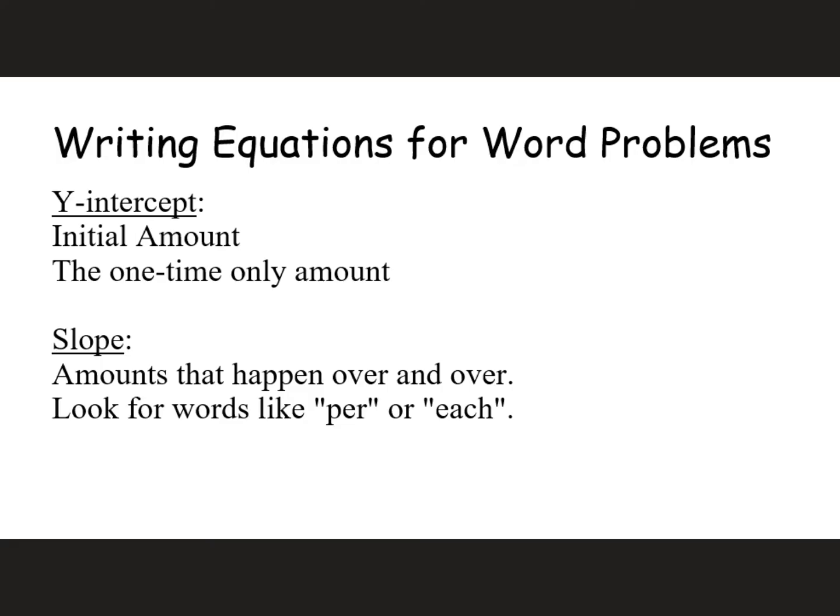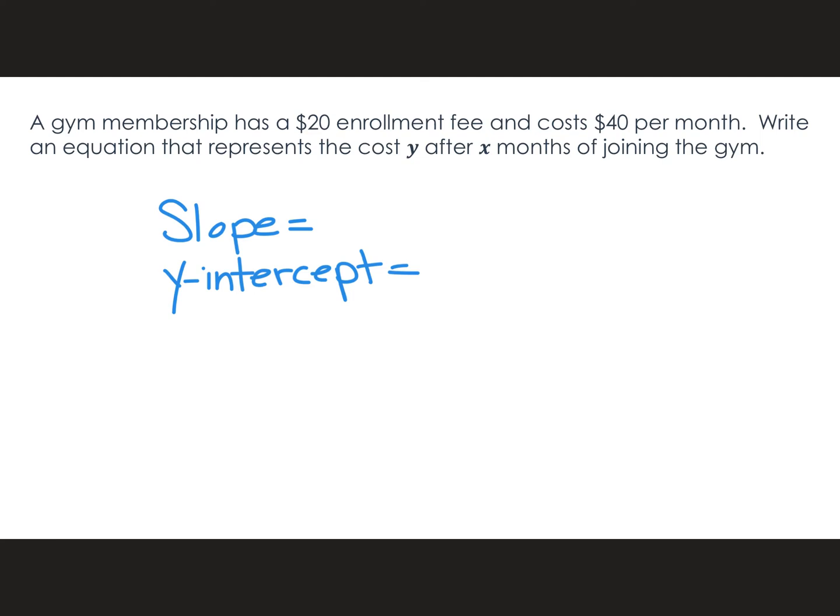Let's take a look at four word problems and see how we do. A gym membership has a $20 enrollment fee and costs $40 per month. Write an equation that represents the cost y after x months of joining the gym. What's the slope — what's the thing that happens 'per'? Do you see the word 'per' right here? $40 per month. So that's my 40.